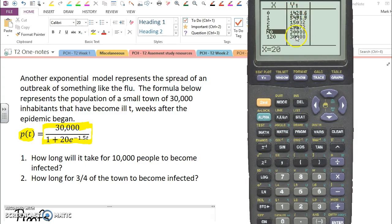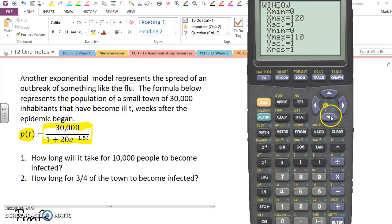So I know my Y max is 30,000, and I'm not sure I need more than about five or six weeks. So I'll go to my window and go from zero to six weeks. Zero for my minimum Y and the population of my town is the max. I never need to look at any more than the population. I'll graph it.